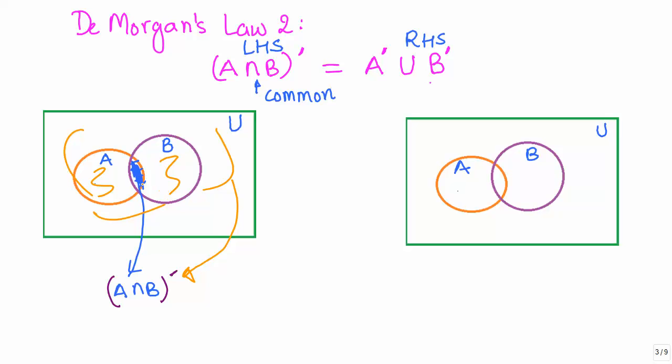Now, this is what we get. What we are getting here is all the elements except the elements that are common to A and B. That is what we have got over here. Now, let us see what happens when we look at the right-hand side.